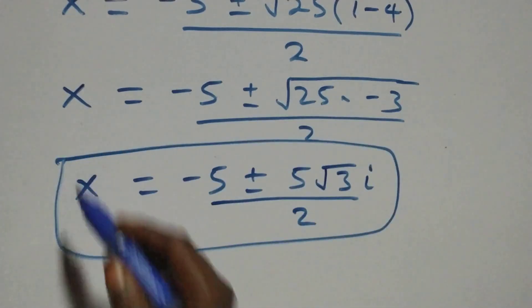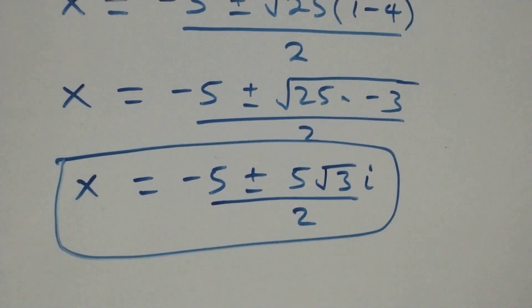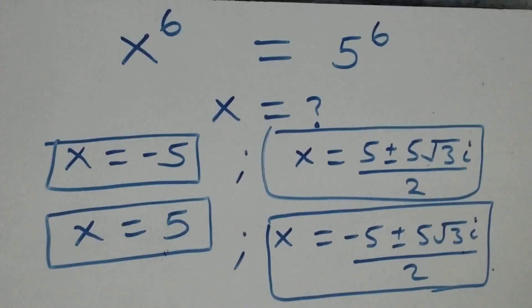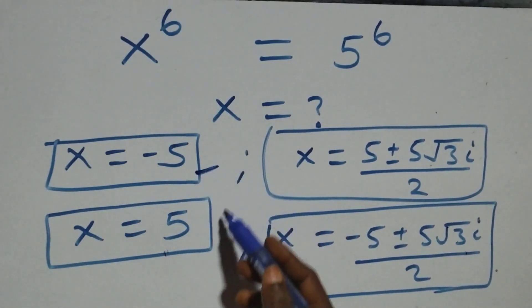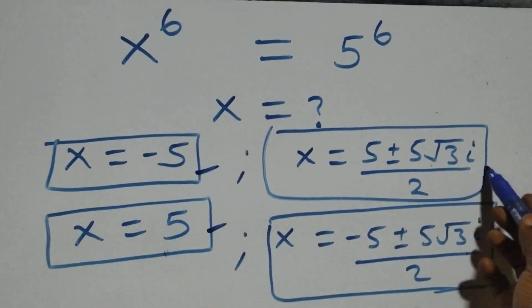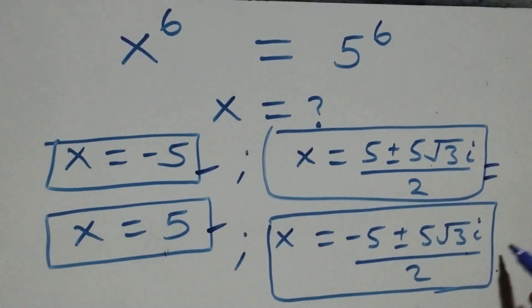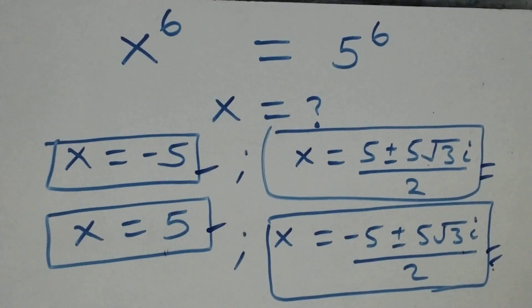We have 2 more complex solutions here. Therefore, all together in this problem, we have 6 solutions: 2 real solutions, 2 complex solutions from the first case, and 2 complex solutions from the second case.